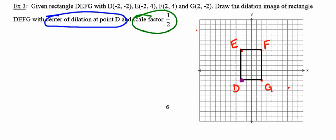So remember that scale factor of 1/2 tells us that the distance from our center of dilation to our new point, our image, is going to be half that of what it was from the center of dilation to the original point. So, for instance, looking at this, the distance from point D to point E is 6 units.